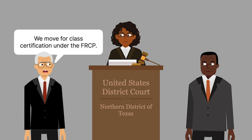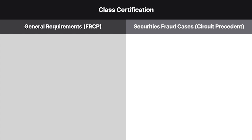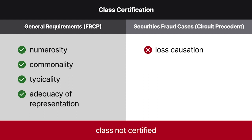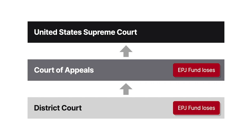The court found that the EPJ Fund met all the general requirements for class certification — that is, numerosity, commonality, typicality, and adequacy of representation. However, in private securities fraud cases, circuit precedent at the time also required plaintiffs to prove loss causation to obtain class certification, which the EPJ Fund failed to do. As a result, the court didn't certify the class. The EPJ Fund appealed to the Fifth Circuit, which affirmed. The United States Supreme Court granted cert.